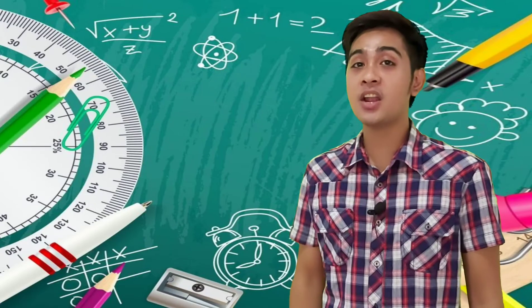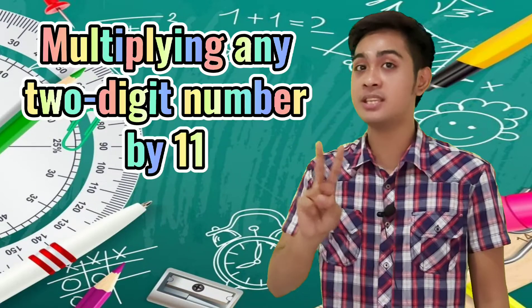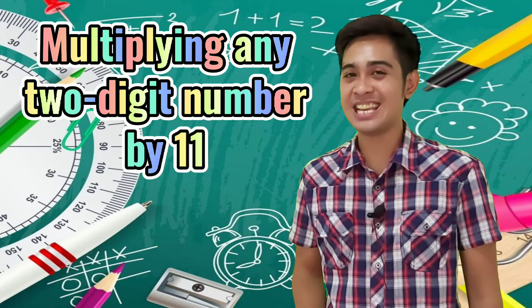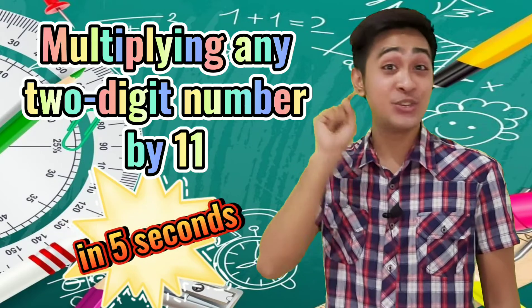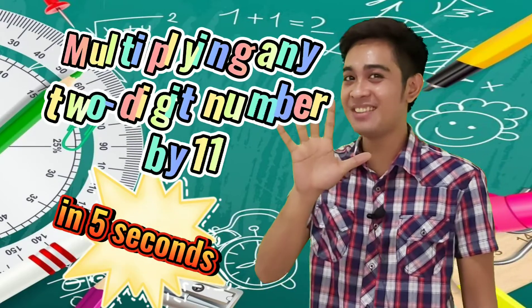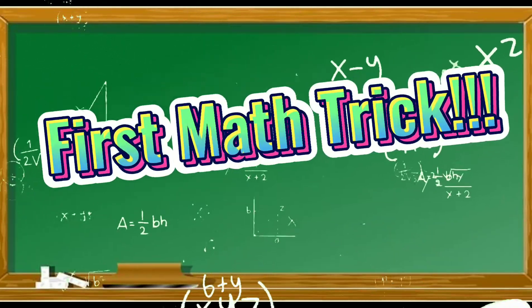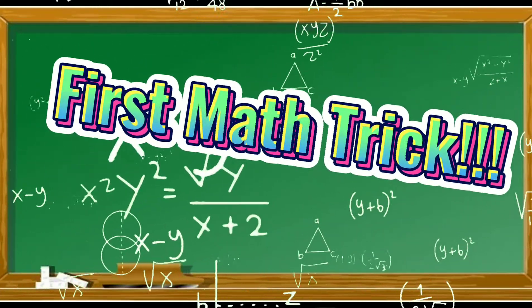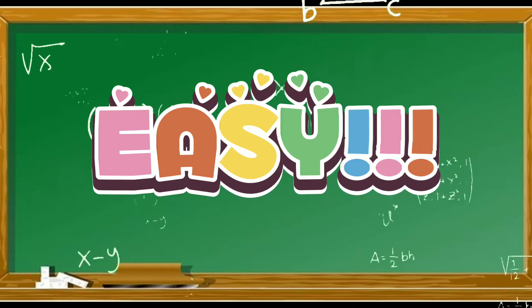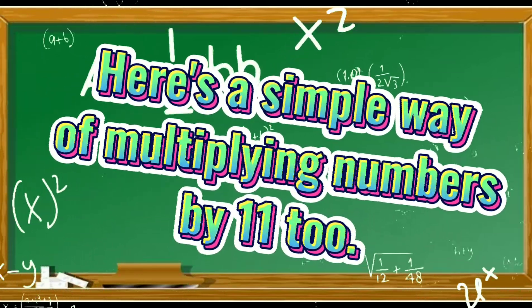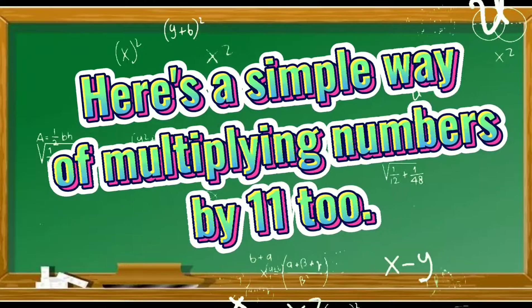Today, you're going to learn how to multiply any two-digit numbers by 11 in just 5 seconds. You heard it right, in just 5 seconds. This trick I'm going to teach you is very easy. Here's a simple way of multiplying large numbers by 11.